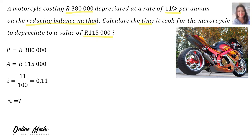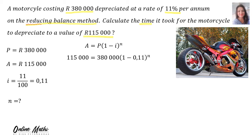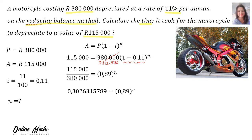Which formula to use? The clue is the reducing balance method, so that is the formula we're going to use. Substituting: in A's place, 115,000 equals, in P's place, 380,000, bracket 1 minus 0.11, to the power of n. In the next step, divide away the 380,000. So we get 0.89 to the power of n. On the left hand side, using your calculator, you get 0.302. Remember, there's no rounding off inside your sum. Now we have an exponential equation we can't solve, so we will use logarithms.